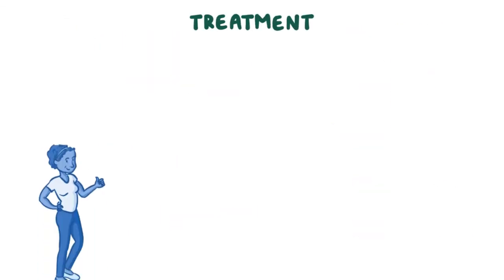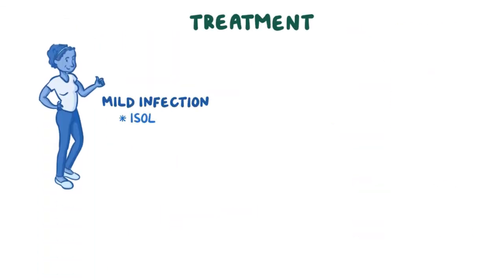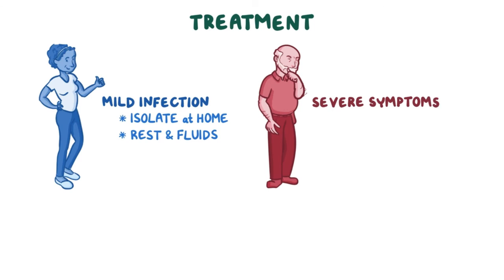In terms of treatment, individuals with mild symptoms should isolate themselves at home so they can improve with rest and fluids. For those with severe symptoms, treatment is focused on supportive care, such as providing fluids, oxygen, and ventilatory support for really ill people.